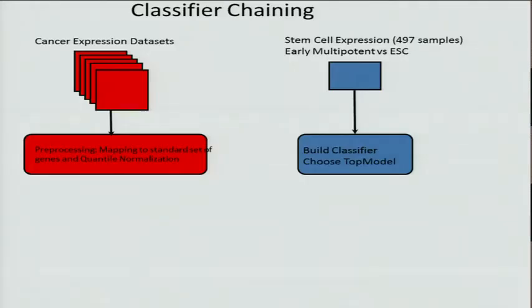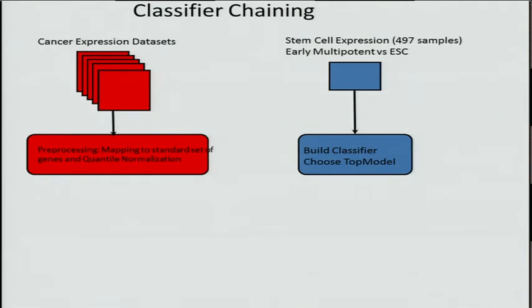Our overall approach is this: we learn specific programs. On the left, we've thrown in a bunch of stem cell expression data sets, and we feed these to classifiers inherited from the machine learning community. We do this through a system we call WekaMine, which tests a large number of feature selection methods and algorithms at once, so we can choose the optimal one for detecting a particular expression profile.